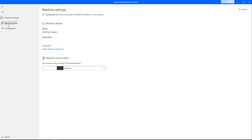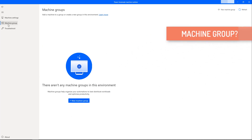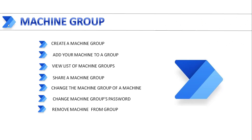In this tutorial we will learn how to work with machine groups. Machine groups allow us to organize multiple machines together to help distribute our automation workload and optimize productivity. We will cover: how to create a new machine group, how to add a machine to a group, how to view the list of machine groups using Power Automate Cloud, how to share a machine group across our team, how to change the machine group of a machine, how to change the machine group password, and how to remove a machine from a group.